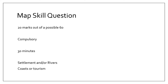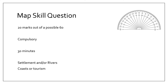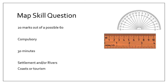To recap: the map skills question involves 20 marks out of a possible 60. It's compulsory and I recommend spending about 30 minutes completing it. Although most questions tend to be about settlements or maybe rivers, they can also throw in other topics such as coastal tourism.